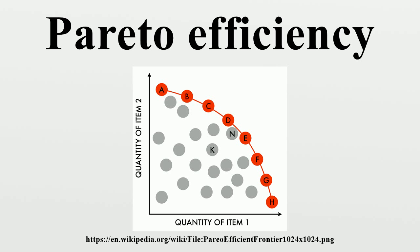The notion of Pareto efficiency is also useful in engineering, given a set of choices and a way of valuing them. The Pareto frontier, or Pareto set, or Pareto front, is the set of choices that are Pareto efficient. By restricting attention to the set of choices that are Pareto efficient, a designer can make trade-offs within this set rather than considering the full range of every parameter. By yielding all of the potentially optimal solutions, a designer can make focused trade-offs within this constrained set of parameters.